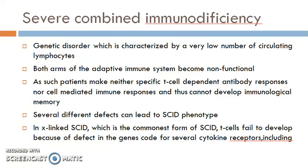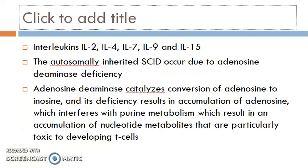The cytokine receptor defect in X-linked SCID includes receptors for the interleukins IL-2, IL-4, IL-7, IL-9, and IL-15. The autosomally inherited form of SCID occurs due to adenosine deaminase (ADA) deficiency.